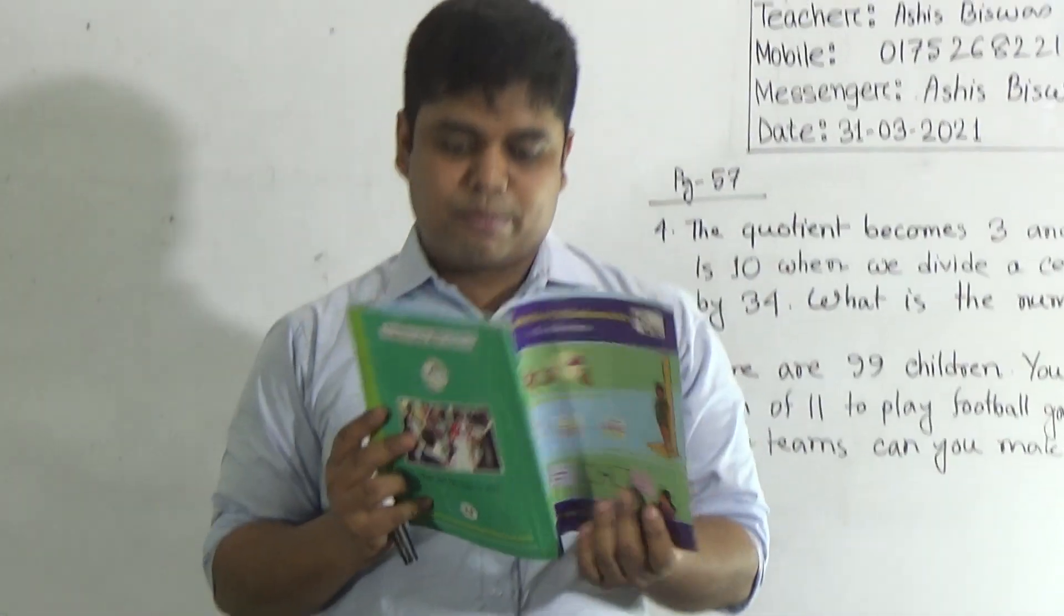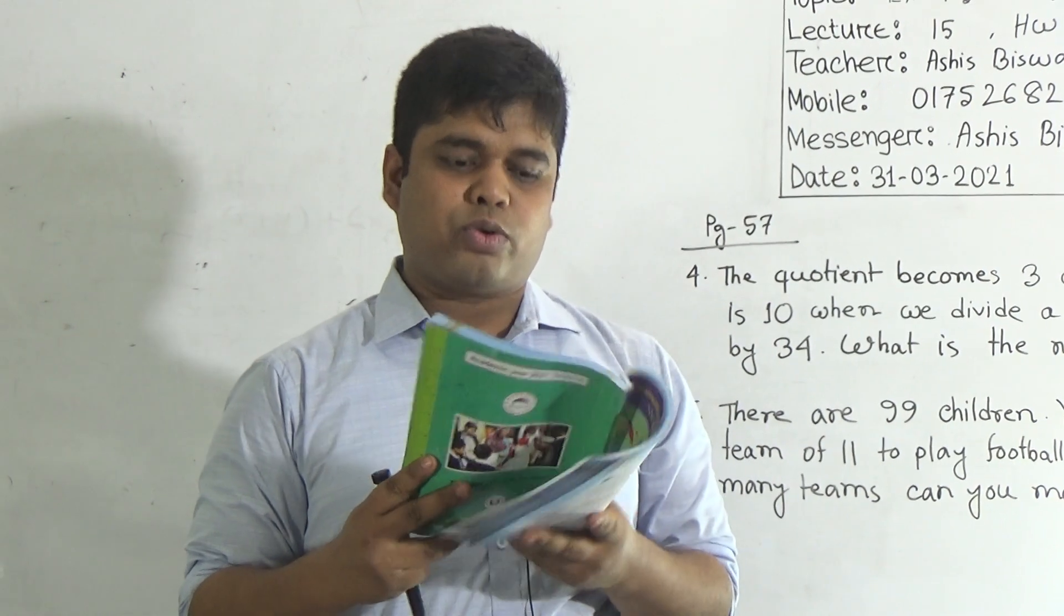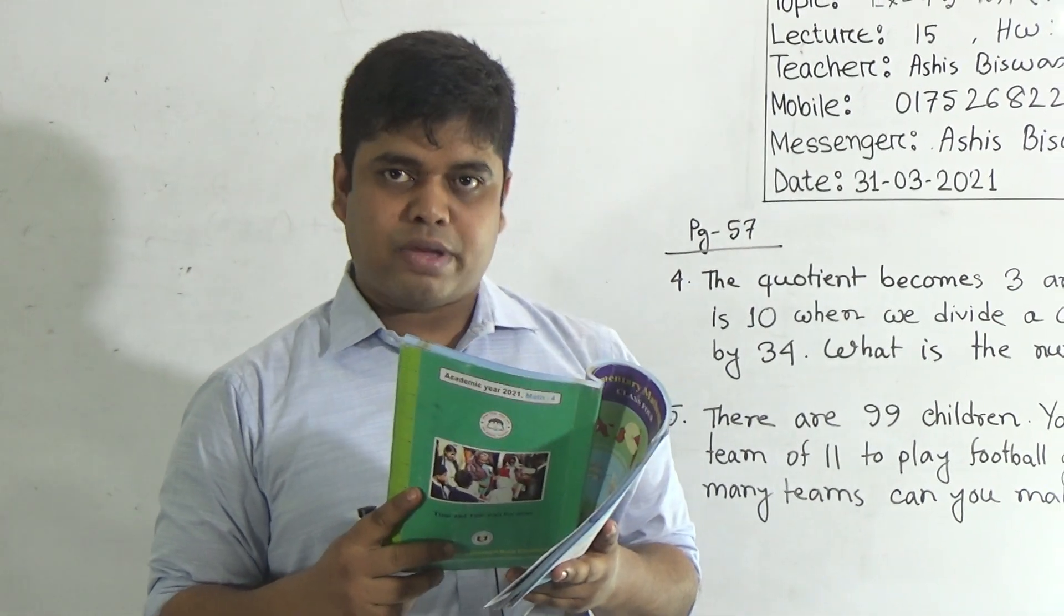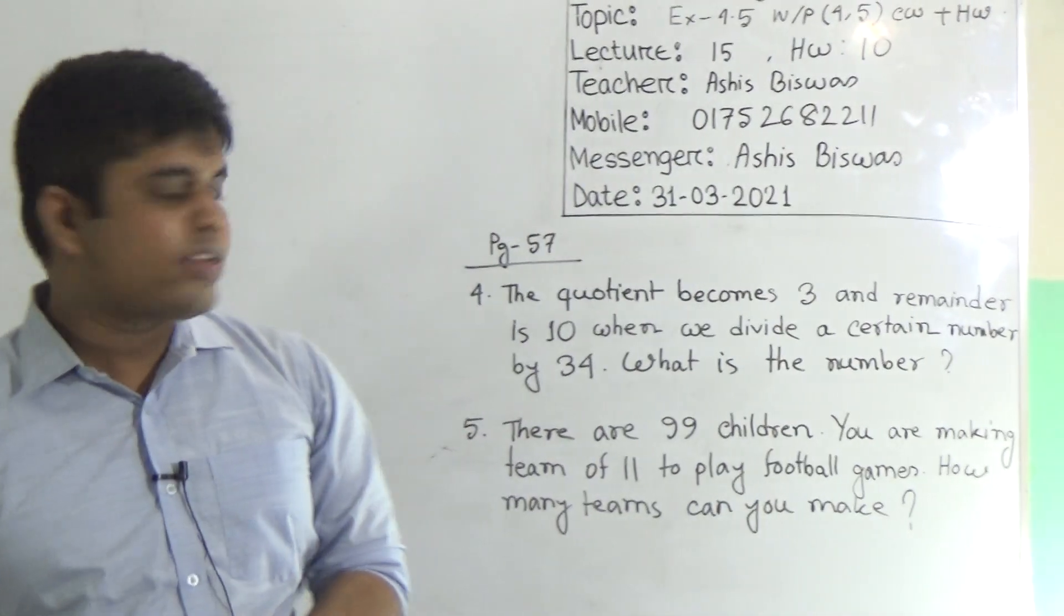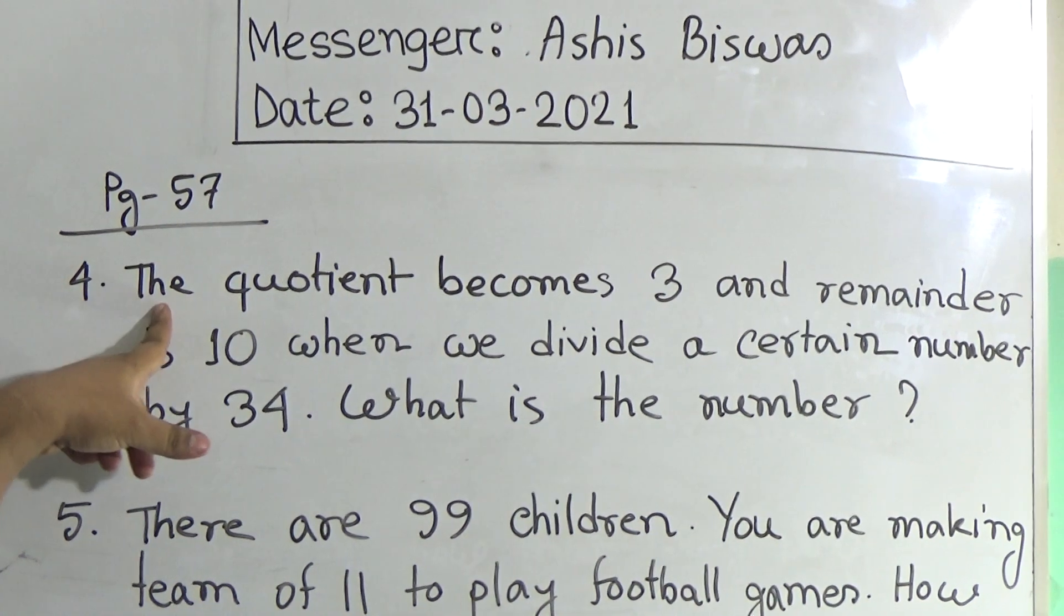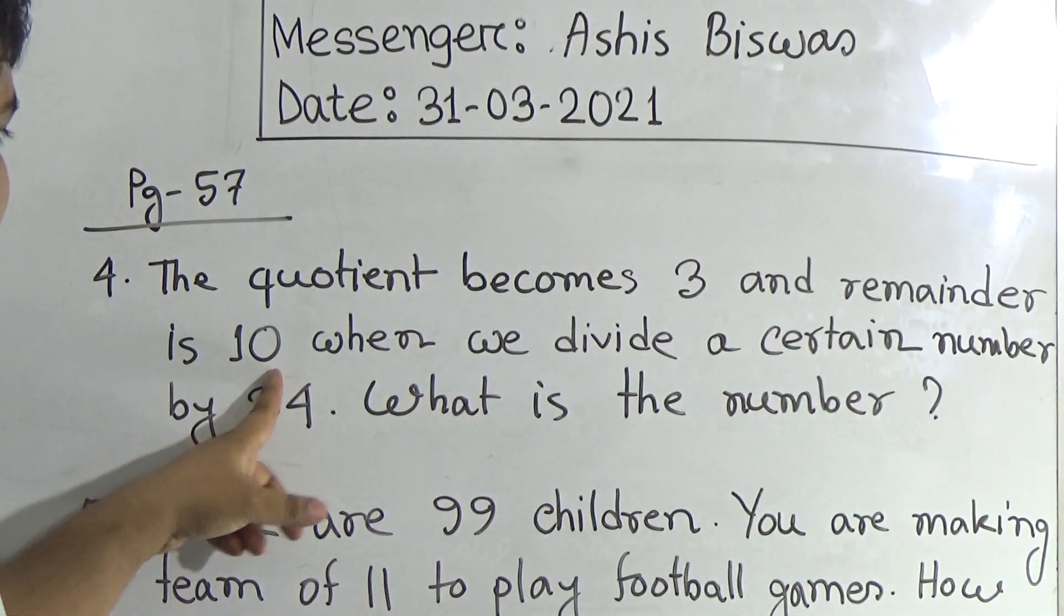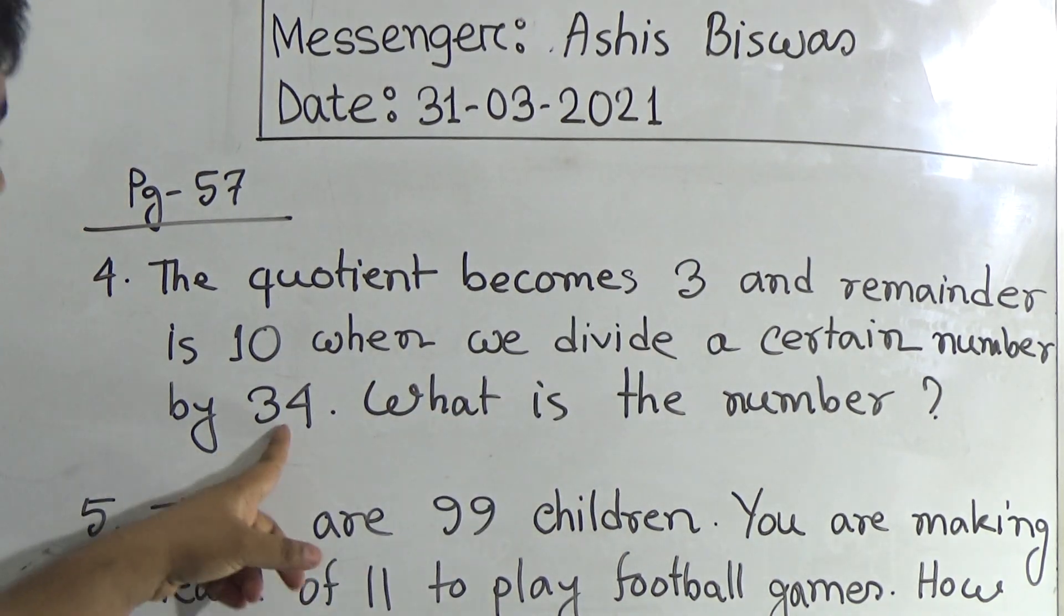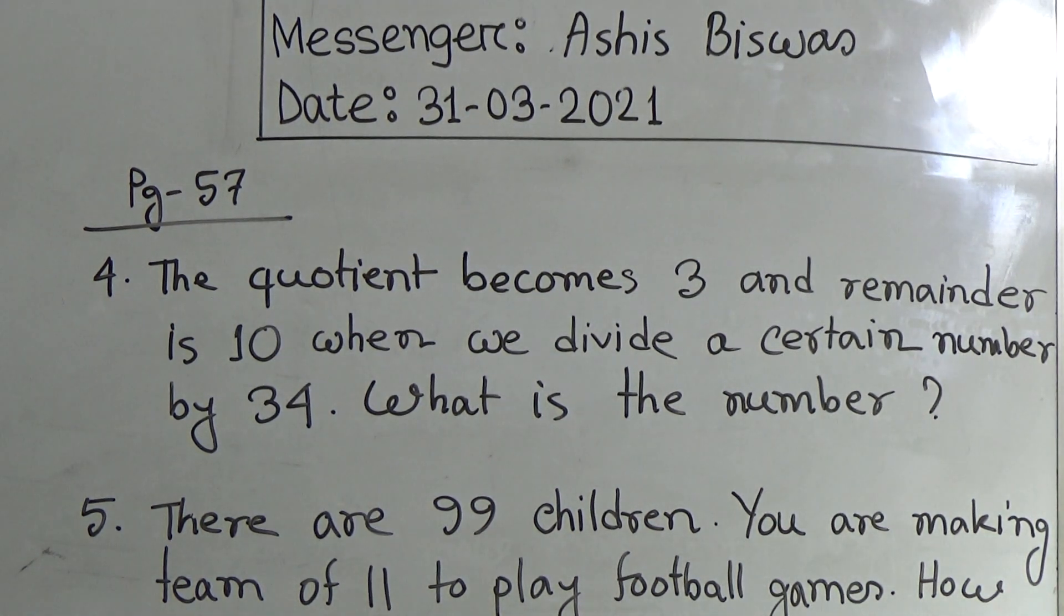My dear students, open your EMB book page number 57. From page number 57 we shall solve question number 4 and 5. I have already written these two questions on the board. First of all we shall solve question number 4. At first we read the question. The quotient becomes 3 and remainder is 10 when we divide a certain number by 34. What is the number?